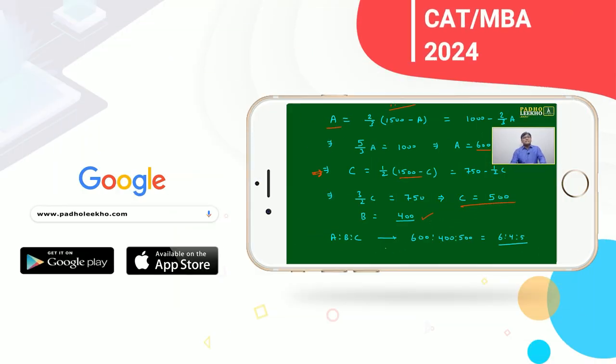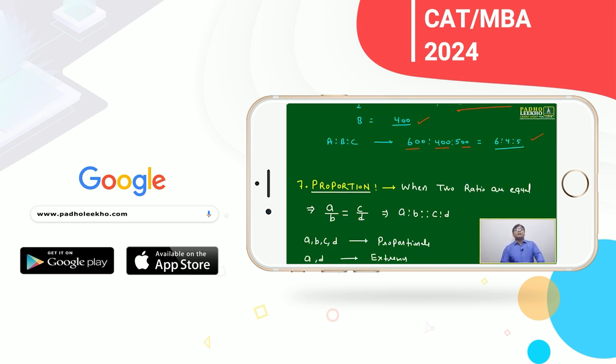Then B automatically will become 400 because sum is 1500. Then the ratio will become A ratio B ratio C, which is 600:400:500. We can say finally it's 6:4:5.